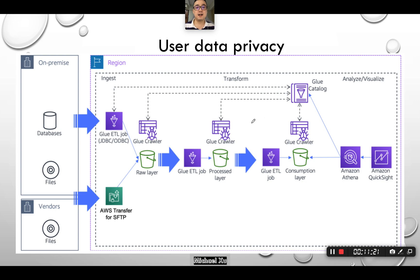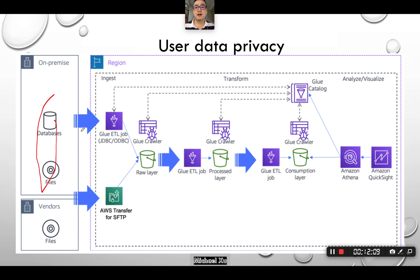Now let's look at some specific use cases for FSI and banking. We understand that the privacy and confidentiality of user data is a key concern. We want to build a function or flow that we usually run on-prem as part of a big data analytics platform. Moving to the cloud, what we're looking for is cost, operational simplicity, and performance. Here, user data is sent to the cloud for ingestion, with a Glue ETL job interfacing different databases via JDBC or ODBC.